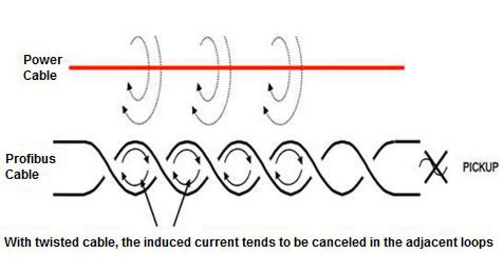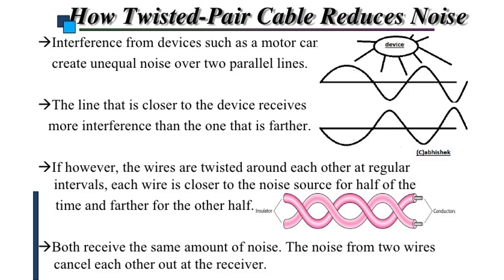Now we will discuss some typical failure modes. Radiated electric fields are most often picked up by a product's external cabling. That is because at the lower end of the radiated immunity frequency range, cables of length 1 to 3 meters can act as effective receiving antennas.